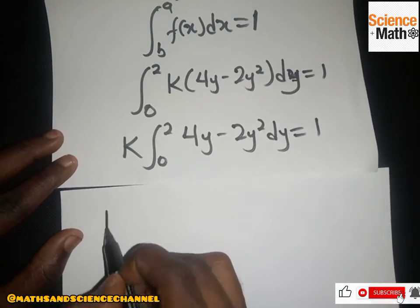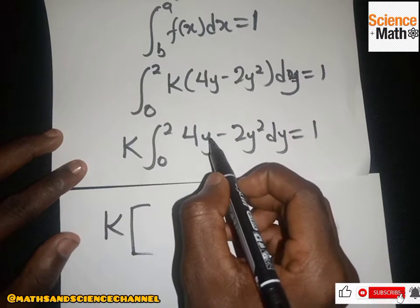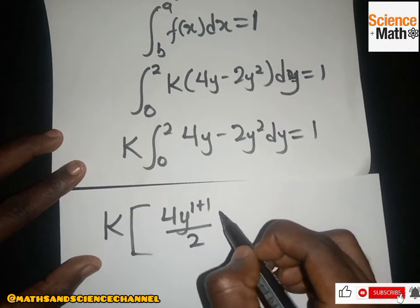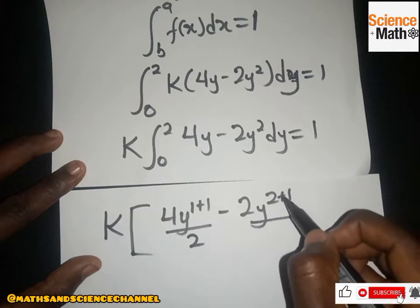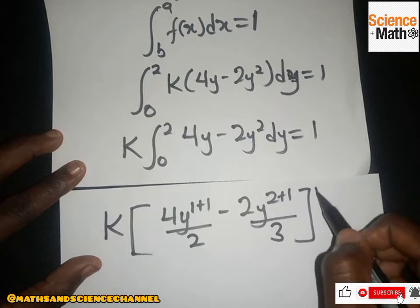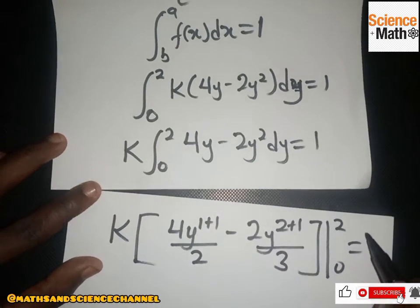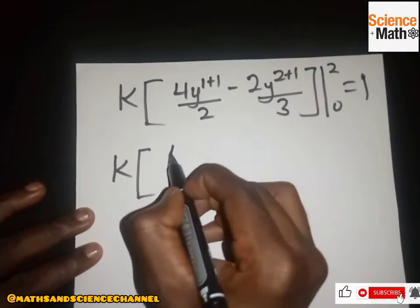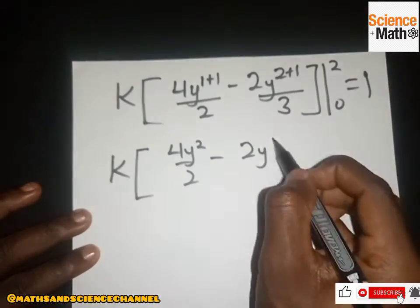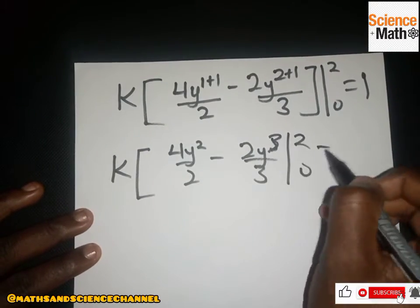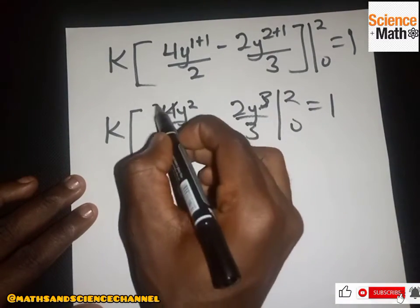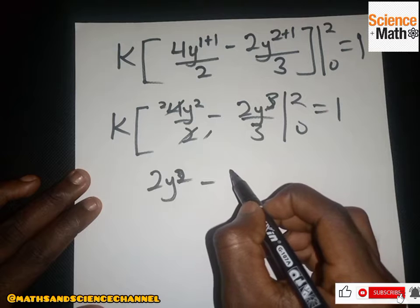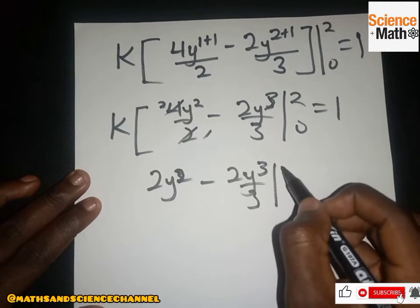Integrating 4y gives 4y²/2, and integrating 2y² gives 2y³/3. So we have k times [4y²/2 - 2y³/3] evaluated from 0 to 2, set equal to one. Simplifying: k times [2y² - 2y³/3] from 0 to 2 equals one.